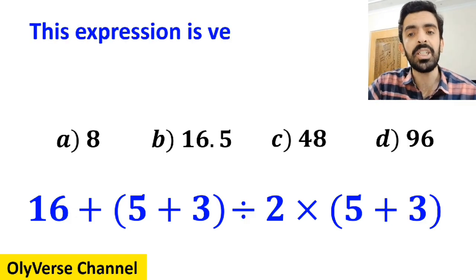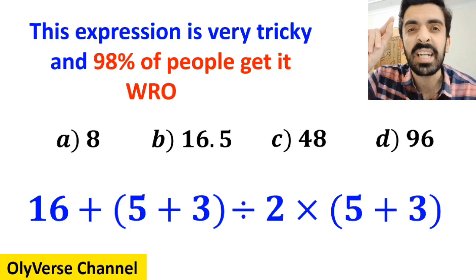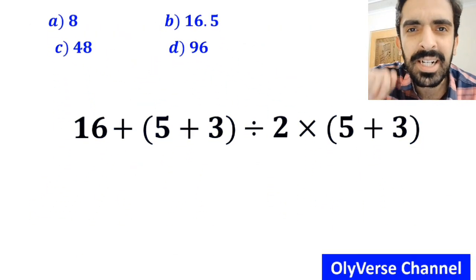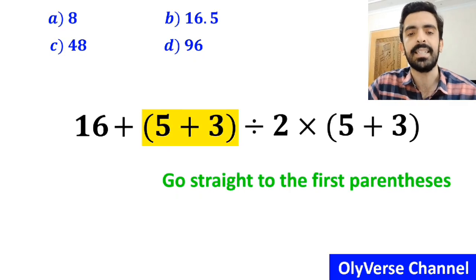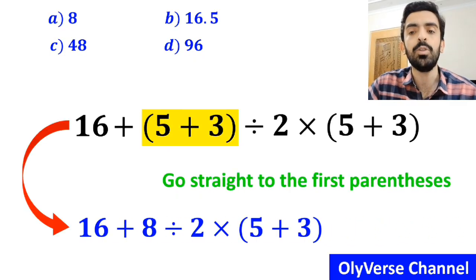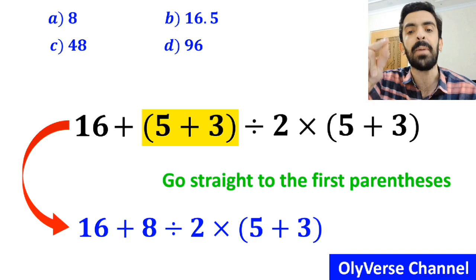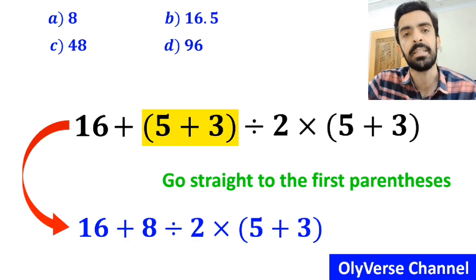This expression is very tricky and 98% of people get it wrong. Let's break it down and solve it together. Many people when solving this question go straight to the first parenthesis and simplify this expression to 16 plus 8 divided by 2 times 5 plus 3 inside the parenthesis.